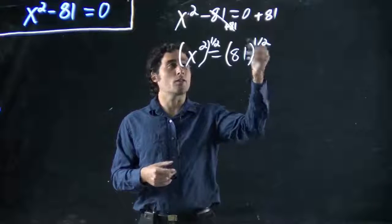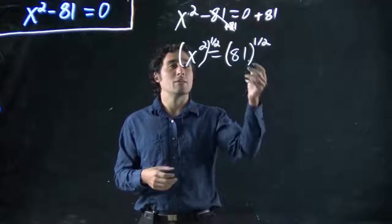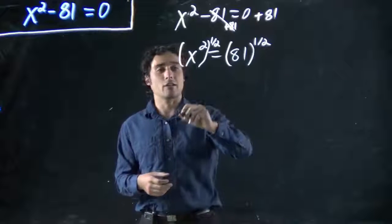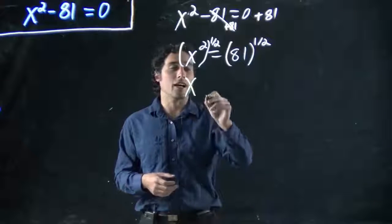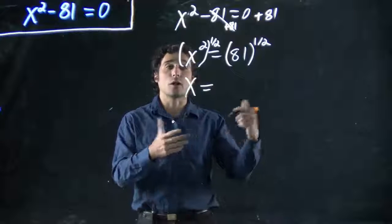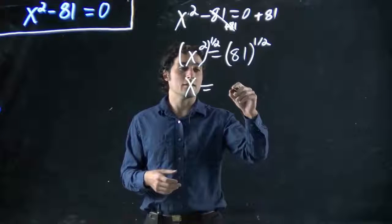Again, you might think of this as square root. Maybe that's how you still prefer to think of it. But it's putting it to the power of one half to get rid of it. We get x on this side. And then 81 to the power of one half, or the square root of 81, is 9.